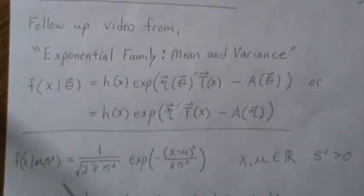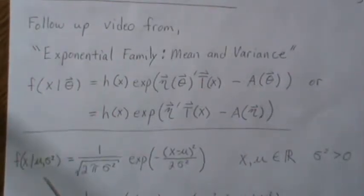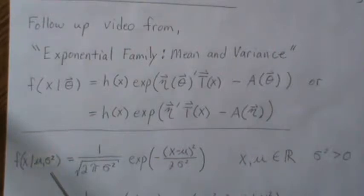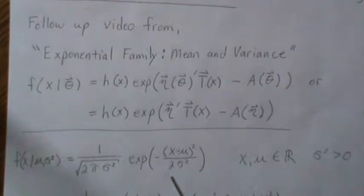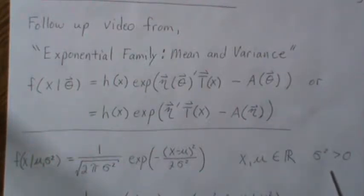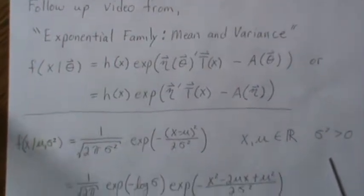Here, f of x with mu and sigma squared are the parameters for the normal distribution, commonly written in this form. X and mu are real numbers, and sigma squared is positive.